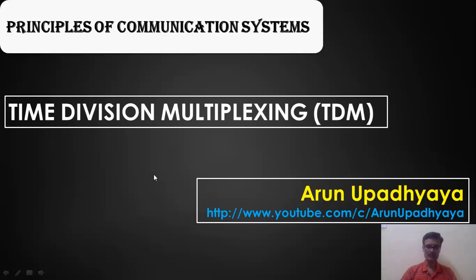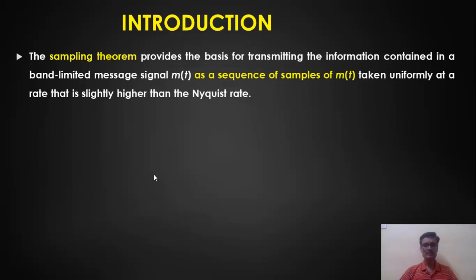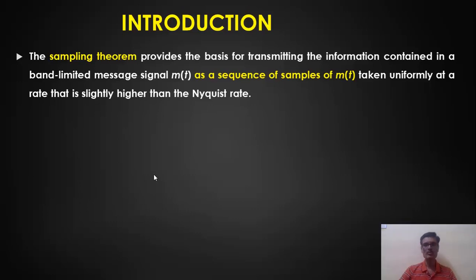Now let us discuss how multiplexing of multiple signals can be achieved. When we take samples of an analog signal and convert it to digital form, we go through three steps: sampling, quantizing, and encoding. According to the sampling theorem, we take fs number of samples per second, where fs must be greater than or equal to twice the highest frequency in the message spectrum.